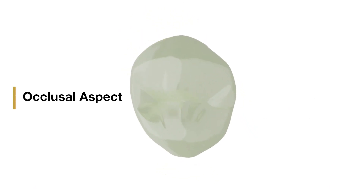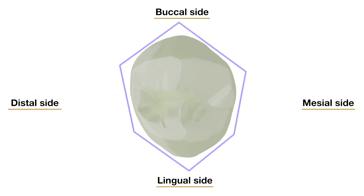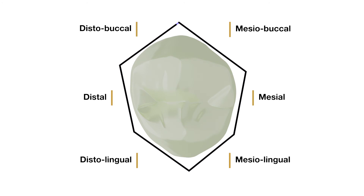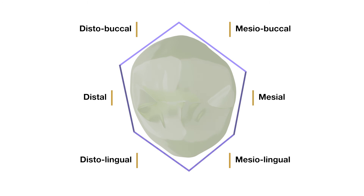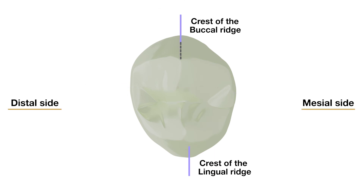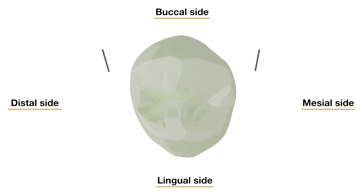Now let us move on to the last aspect, that is the occlusal aspect. The occlusal aspect of the maxillary first premolar resembles roughly a six-sided or hexagonal figure. The six sides are made up of mesiobuccal, mesial, distal, mesolingual, distal, and distobuccal. This hexagonal figure is not equilateral and can be used to compare individual sides. The two buccal sides are almost equal, with the mesiobuccal side being slightly longer. The mesial side is shorter than the distal side, and the mesolingual side is shorter than the distolingual side. The crest of the distal contact area is somewhat buccal to that of the mesial contact area, and the crest of the buccal ridge is somewhat distal to that of the lingual ridge. Buccolingual taper can be appreciated from this side, thus the crown is wider on the buccal than on the lingual side.